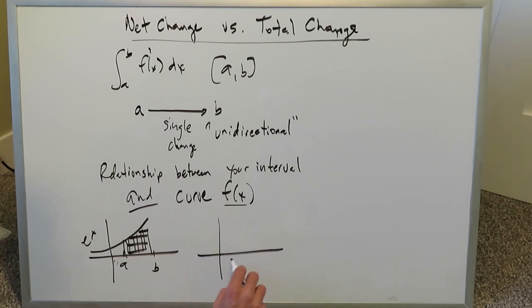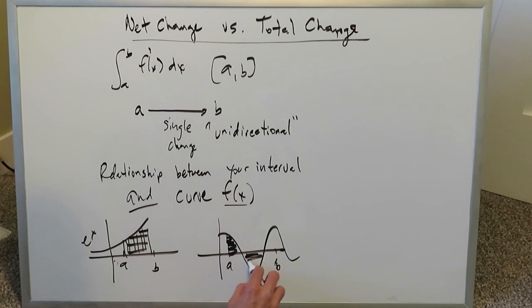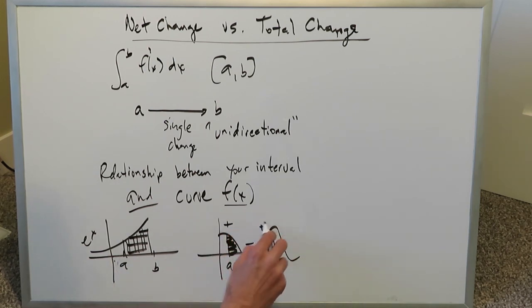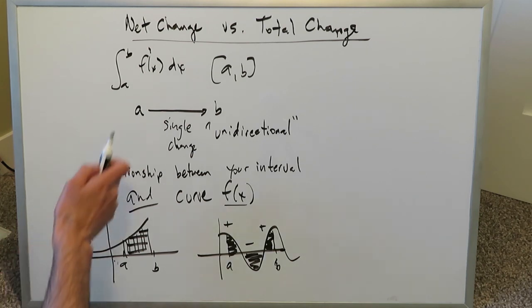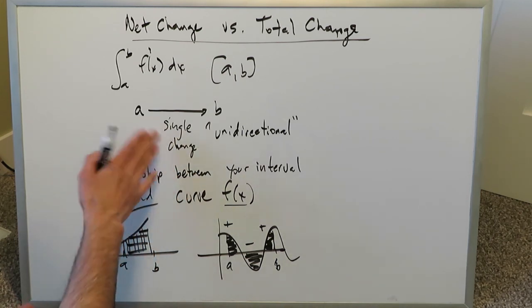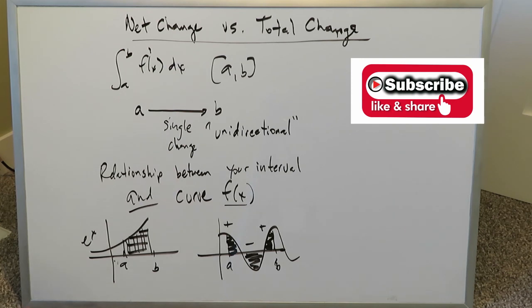But if you're looking at a sinusoidal curve from a to b, you don't have a uni-directional movement. In terms of displacement, you're looking at some area to the right (positive), some to the left (negative), and then back to the right (positive) — multiple directional movements within the same interval. Don't automatically assume that just because you have an interval from a to b, only a single event is occurring. Your model could have multiple events within that narrow interval.